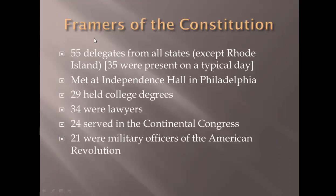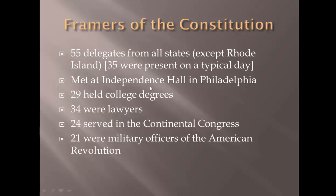There's a group of people we're going to refer to as framers — not farmers. They built the frame of the government we have today. 55 delegates came from all 13 states. Rhode Island did not send representatives, so 35 were present on a typical day. They met at a place called Independence Hall — the same building where Thomas Jefferson and a group of men decided to declare independence, located in Philadelphia.